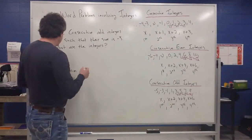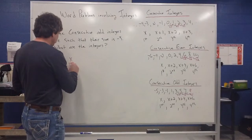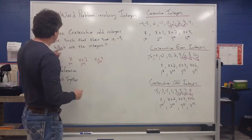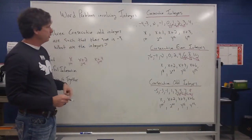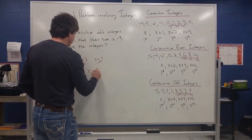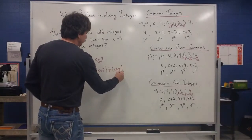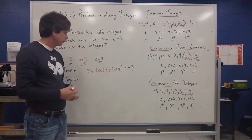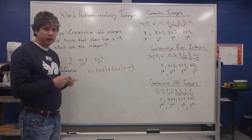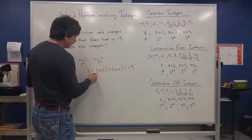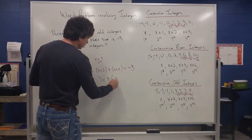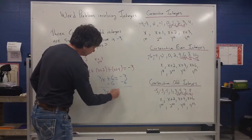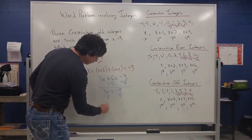But if I am going to use an equation, I'll let x be the first, x plus 2 be the second, and x plus 4 be the third. Their sum equals negative 3, so: x plus (x plus 2) plus (x plus 4) equals negative 3. Combining like terms: 3x plus 6 equals negative 3. I subtract 6 from both sides to get 3x equals negative 9, then divide by 3, and x equals negative 3.